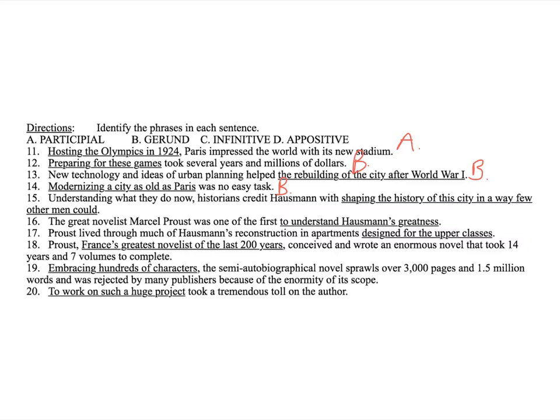New technology and ideas of urban planning helped the rebuilding of the city after World War I. Helped what? Helped the rebuilding of the city. That's acting as a direct object, so it's a noun. Therefore, again, we say gerund. Modernizing a city as old as Paris was no easy task. What was no easy task? Modernizing a city. Again, it's the subject, also gerund. So, three gerunds in a row here. Notice how they are essential to understanding the sentence that they're in. Understanding what they do now. Historians credit Hausmann with shaping the history of the city in a way few other men could. Right? Now, this is the key word here. They credit Hausmann with something. That thing is shaping the history of the city in a way few other men could. That is a noun because this acts as the object of a preposition. One of the things that a gerund phrase can do is act as the object of a preposition. Prepositions need objects. Without them, they don't make any sense. So, this is necessary. It's a gerund phrase.